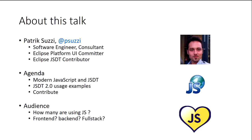JSDT, which is the JavaScript Development Tools for Eclipse, is a project to enable people to write JavaScript. In this talk, we'll see how modern JavaScript influences JSDT. You will see some usage examples, and you will see how to contribute to this project if you are interested.